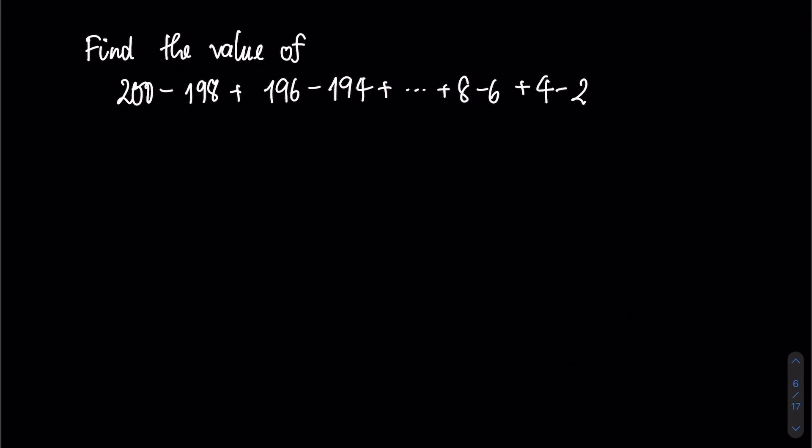Right now we are going to solve this question together. We need to find the value of 200 minus 198 plus 196 minus 194 plus all the way until 8 minus 6 plus 4 minus 2.